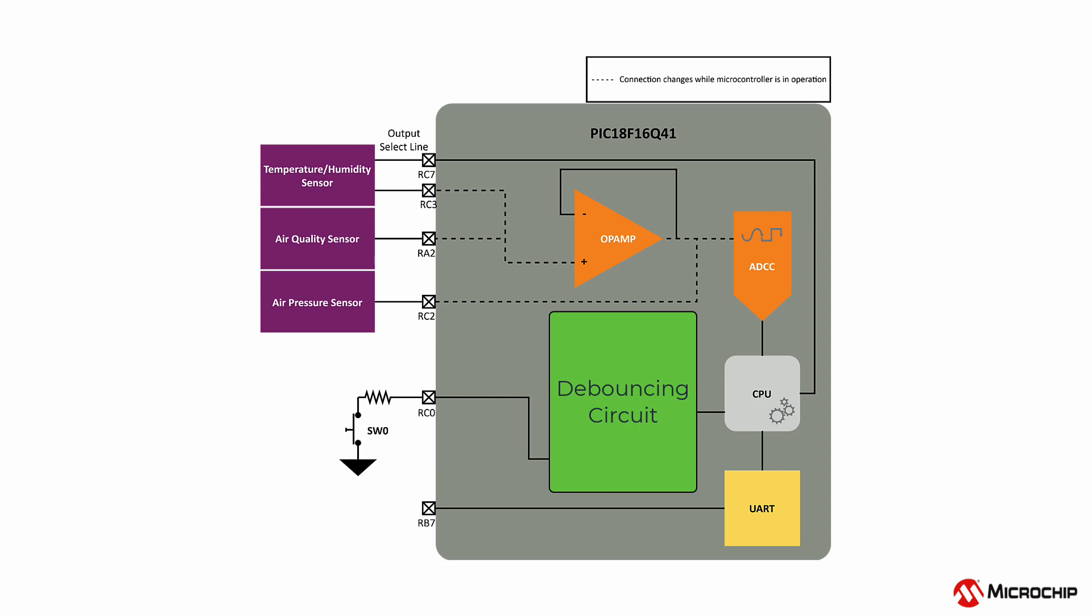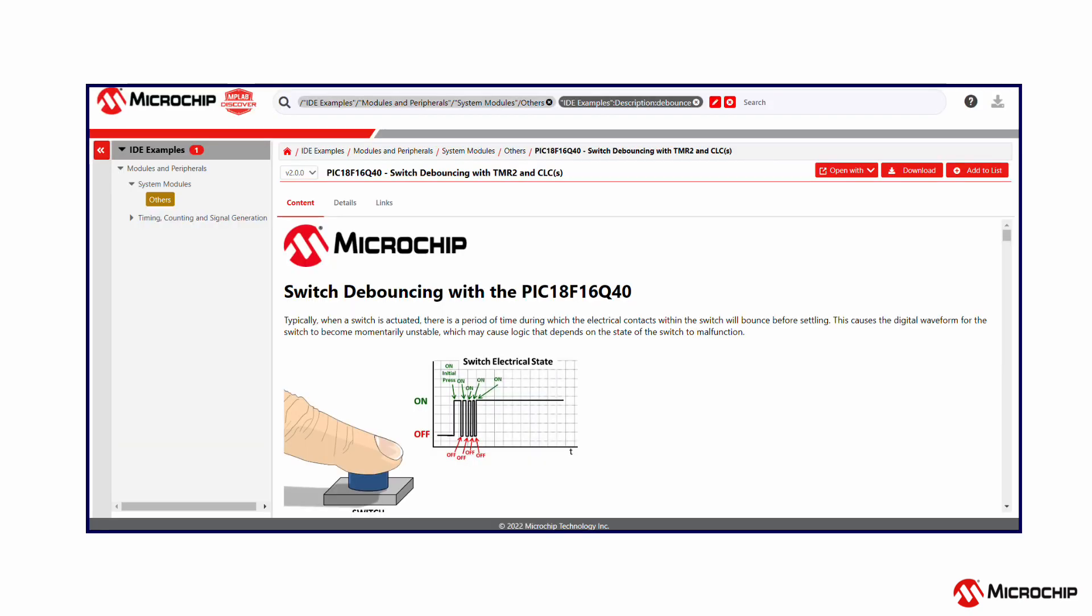Switching between the different sensors is handled by reading the Curiosity Nano's SW0 push button, which is being debounced using the CLC and timer peripherals. For more information, see the switch debouncing with the PIC-18 F16 Q40 GitHub and Discover post linked below.